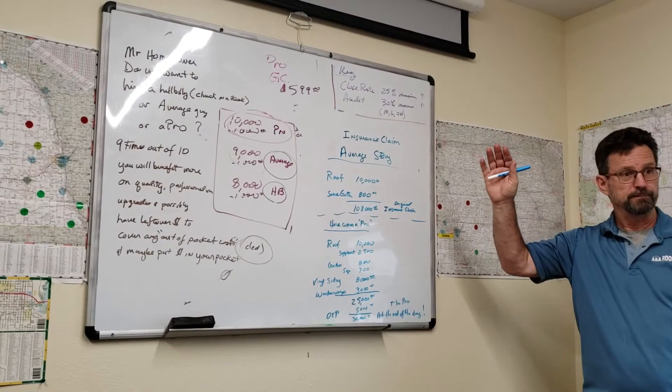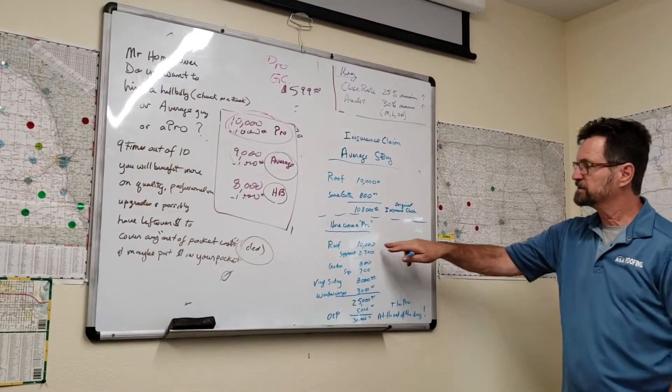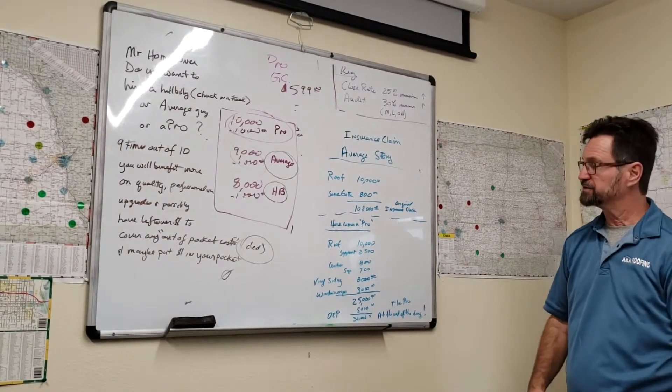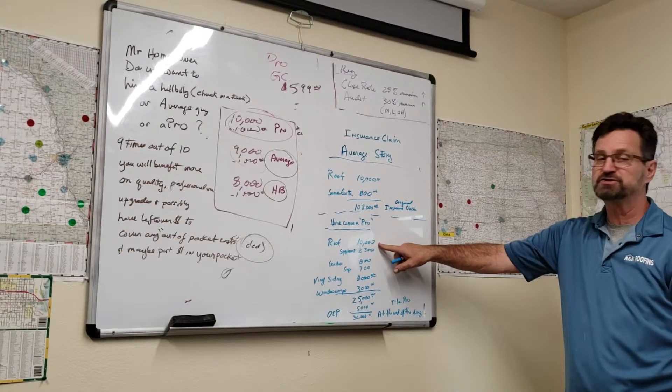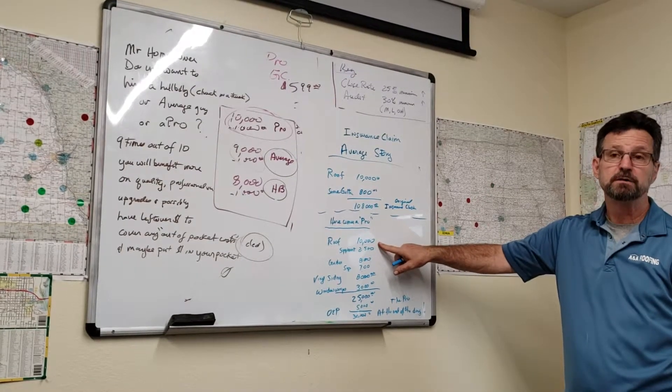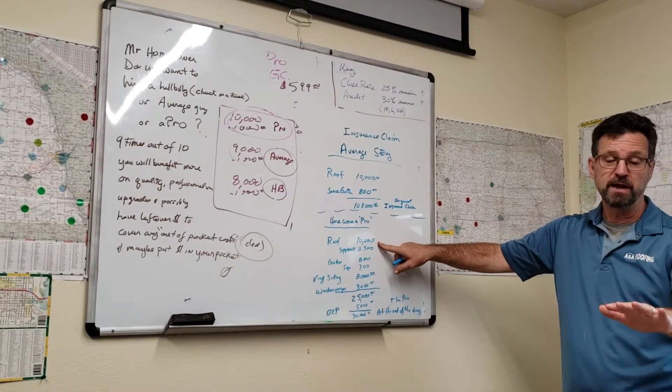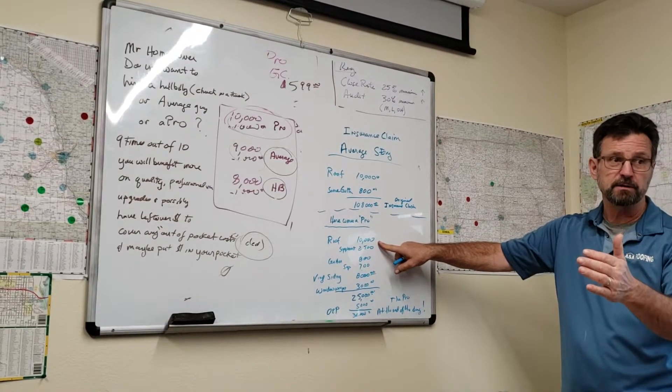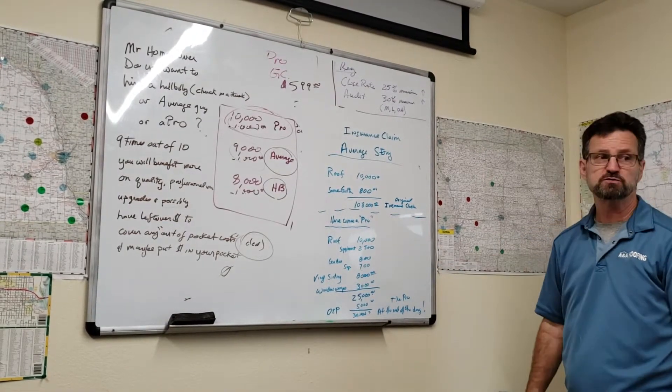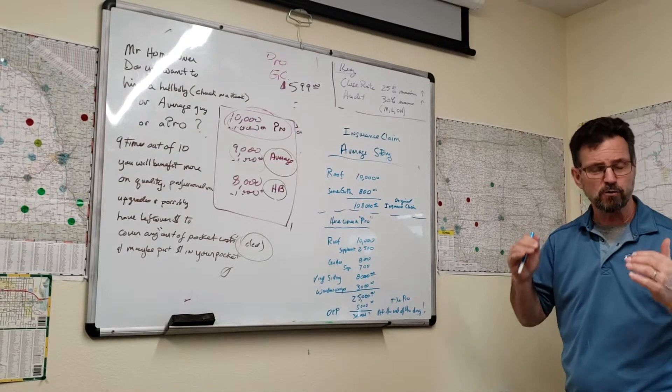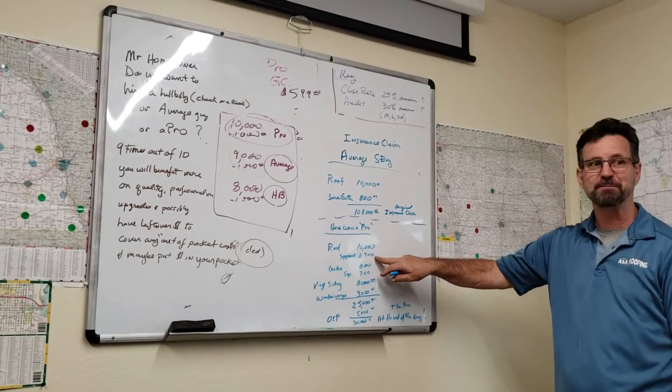Here comes the pro. The pro comes in, looks at your roof and goes, guess what, Mr. Homeowner? There was a bunch of collateral damage on your siding where your roof met your siding up under that gable. And there's $2,500 worth of woodwork that we have to do to make it right. The insurance company will pay that.